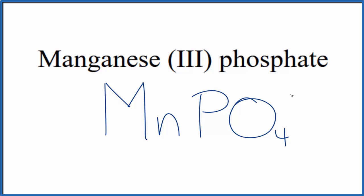If you were given the formula here and asked to write the name, you'd know that the manganese, because of this Roman numeral III, would be 3+. So you'd have manganese and then PO4, that's the phosphate.